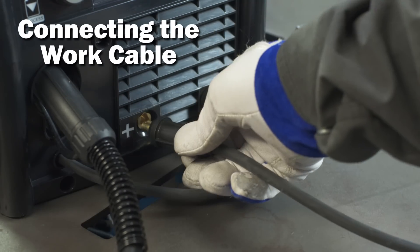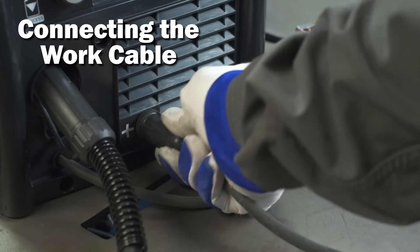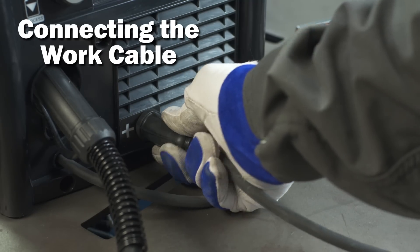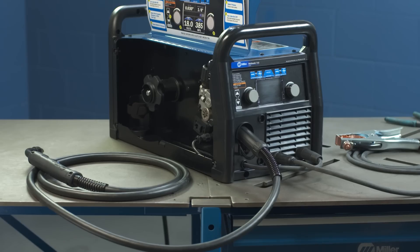Next, insert the work cable into the positive receptacle and turn clockwise to tighten. The machine is now set to DCEN or negative polarity.